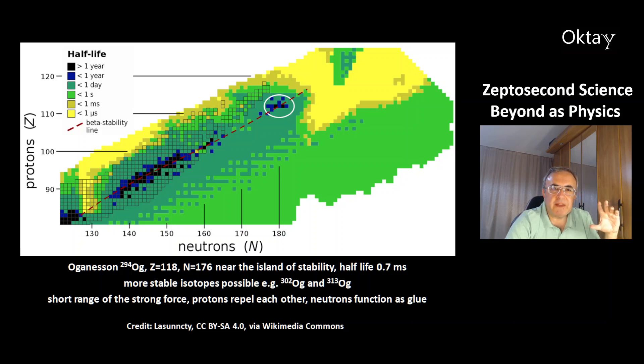This is a map of the isotopes of the heavier elements. Oganesson isotope 294, atomic number 118, and neutron number 176. And this in the dark in the middle is called island of stability. Which means the isotopes in this region should be a bit more stable than the isotopes around this region. And this oganesson-294 isotope has a half-life of 0.7 milliseconds. But there could be more stable isotopes of this element. For example, isotope 302 or 330.